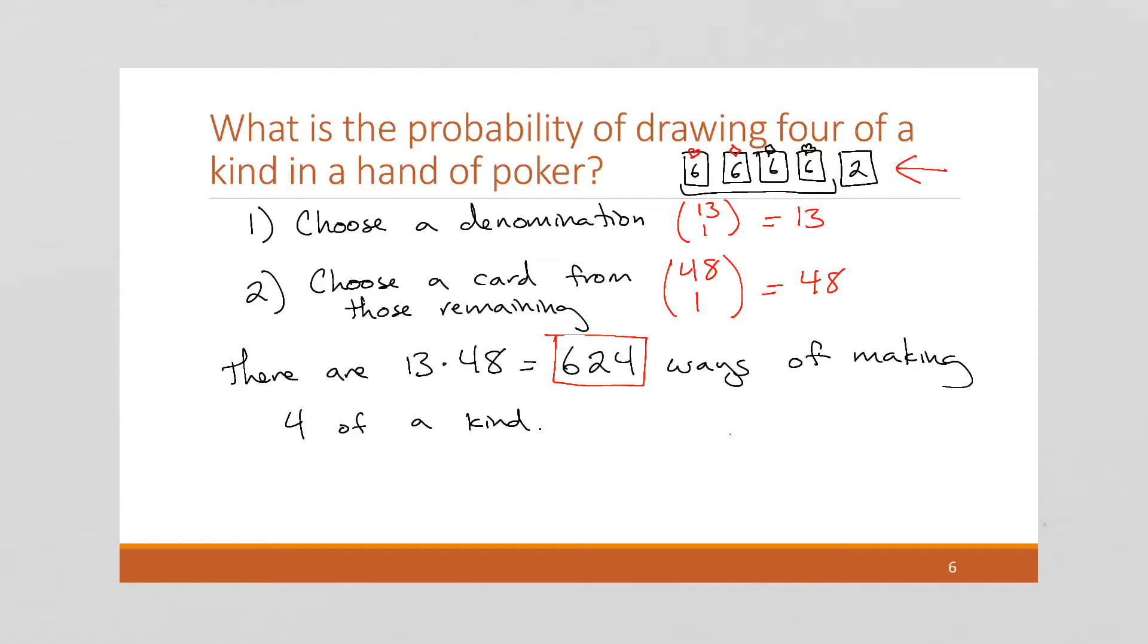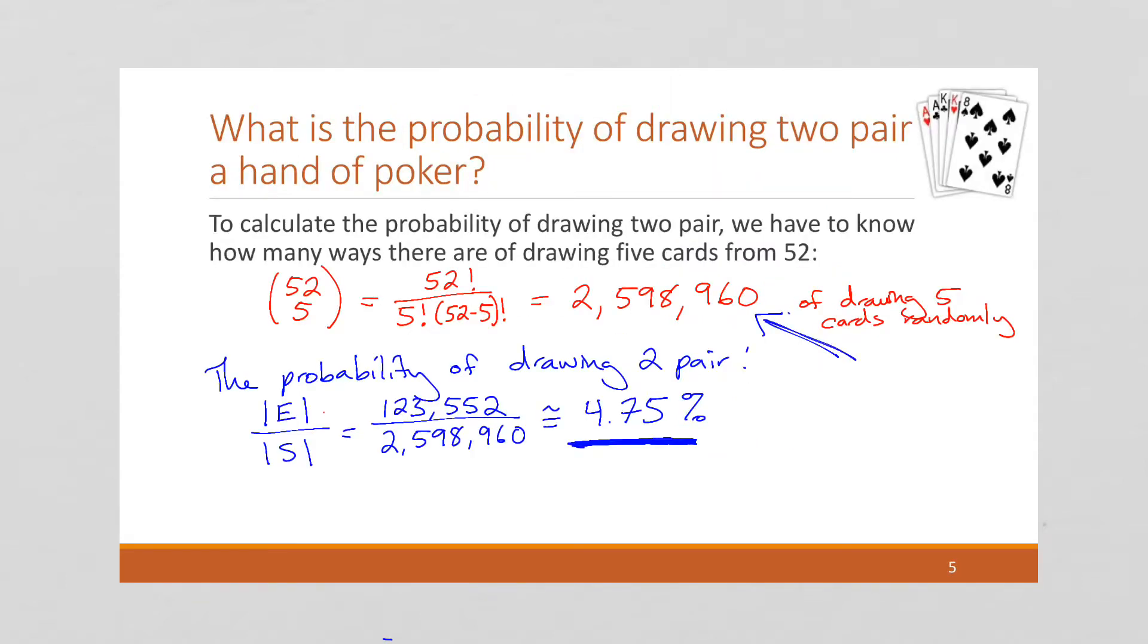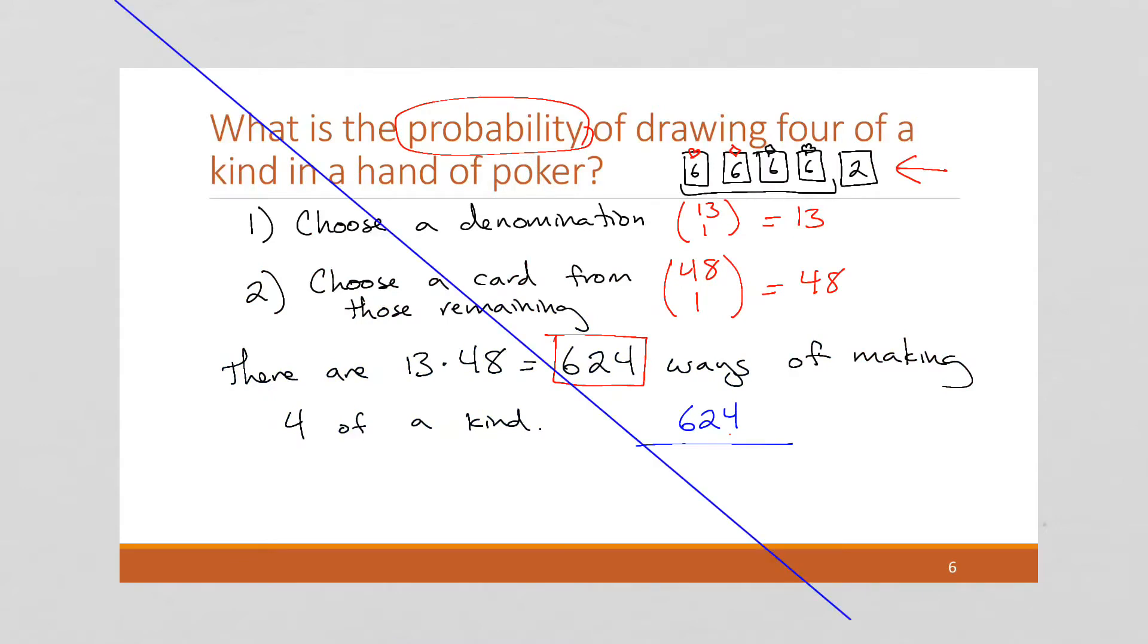But again, we're still not answering the question. The question was, what's the probability? So, we need to do that. We figured out we're going to get 624 ways of making four of a kind. If we go back, we found this value of how many ways total there are to choose five cards randomly. So, we're going to divide by 2,598,960. This works out to 0.024% chance. And the less likely the probability of it occurring, the more it's usually worth in a game of gambling.